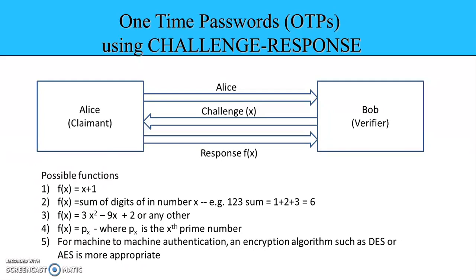So if a person is authenticating himself or herself to a server, we have to use functions which are simple enough to be computed by the users. But if we have machine-to-machine authentication, we can also use encryption functions like DES or AES, because those are more appropriate in that context.